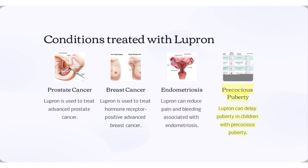Endometriosis: Lupron can reduce pain and bleeding associated with endometriosis. Precocious puberty: Lupron can delay puberty in children with precocious puberty.